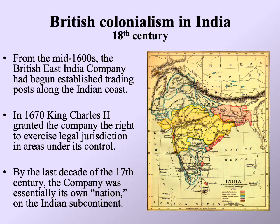To be more precise, it wasn't going to be the British government engaging in colonial activity in India, but rather the British East India Company, from a pretty early point in the mid-1600s establishing trading posts along the Indian coast. Very quickly they were given the right by King Charles II to exercise complete authority — legally but also in pretty much every respect — in areas that it brought under its control, such that by the last decade of the 17th century the Company, as it was often simply referred to, was essentially its own nation on the Indian subcontinent.